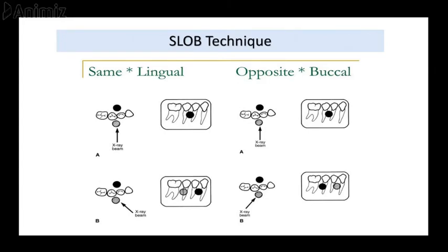In the SLOB technique, if the object moves to the same side as the position indicating device, the object is located to the lingual side. If the object moves in the opposite direction of the position indicating device, then the object is located buccally. In the video, the palatal root moved in the same direction as the position indicating device, so the root is located lingually.